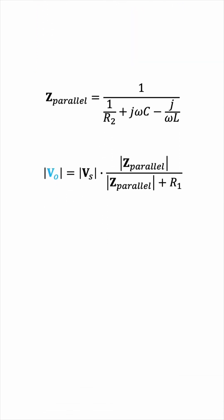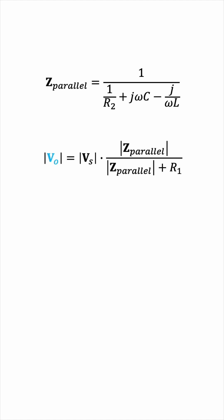If we look at the voltage division equation, then it's clear that to maximize VO, we need to maximize the magnitude of Z parallel. You see, the amplitude of Vs is constant, and R1 is constant as well.